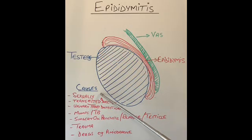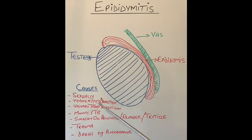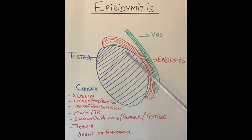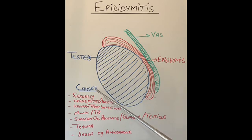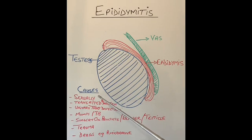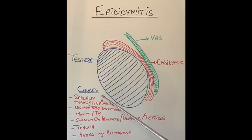The commonest cause of this infection is sexually transmitted diseases. The commonest bacteria involved are chlamydia and gonorrhea. If somebody develops a sexually transmitted disease which results in epididymitis or even orchitis, then that person's sexual partners should also be tested for sexually transmitted infection, as these infections are highly contagious and can transmit from one person to the other quite easily.